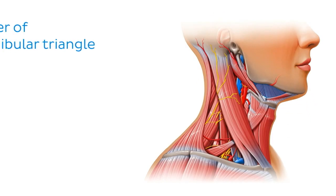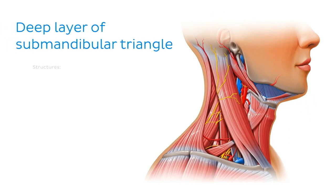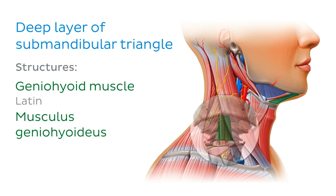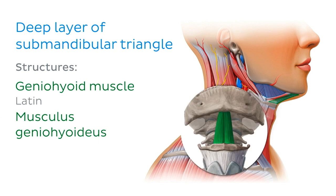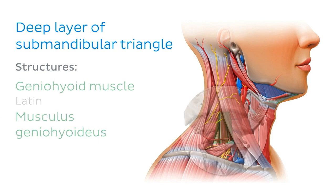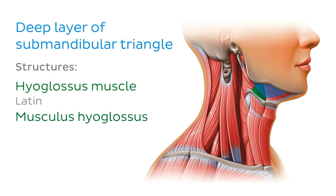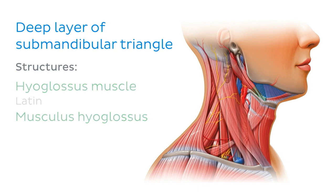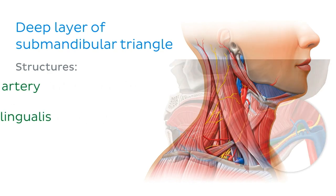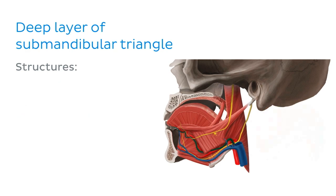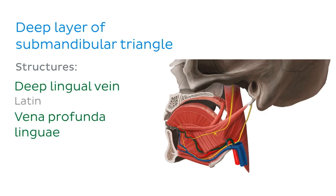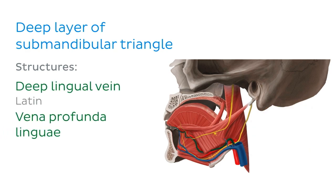In the deep layer of the submandibular triangle, the geniohyoid muscle, seen in the midline of the floor of the oral cavity, and the hyoglossus muscle, which is one of the tongue muscles, are found. The lingual artery and vein can also be found in the deep layer of the submandibular triangle.